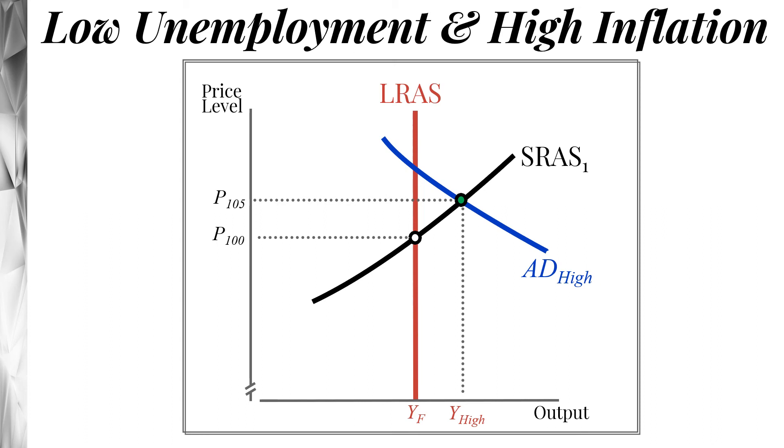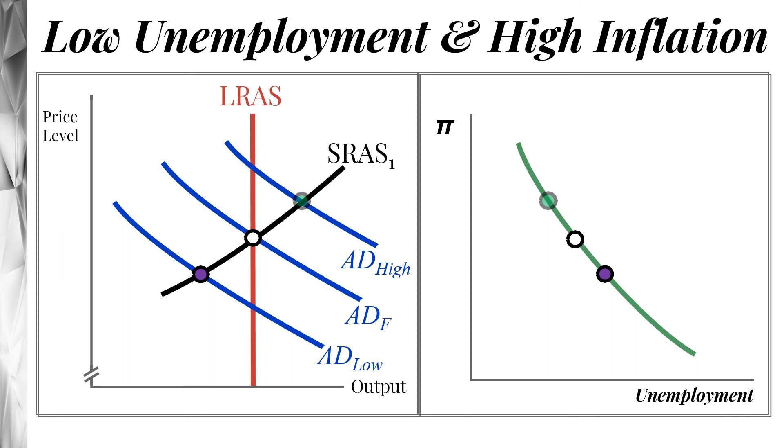So basically this is what we see when we manipulate the aggregate demand curve. When you change the aggregate demand curve, you just move along the Phillips curve, right? So high aggregate demand leads to high inflation and low unemployment. If we're at our equilibrium, our full employment level of aggregate demand, then we have average inflation and average unemployment. And if we're at a low aggregate demand, what we end up with is low inflation and high unemployment.